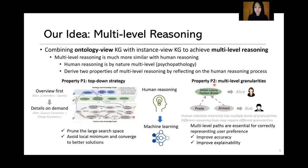The second property is multi-level granularities. Human intention inherently has multiple levels of granularity. For example, Alice may like most luxury fashion brands, while Bob may have a specific preference for Armani. Similarly, different reasoning hops may require different granularities. So extracting multi-level paths in which each hop belongs to a different level is essential for correctly representing user preference.